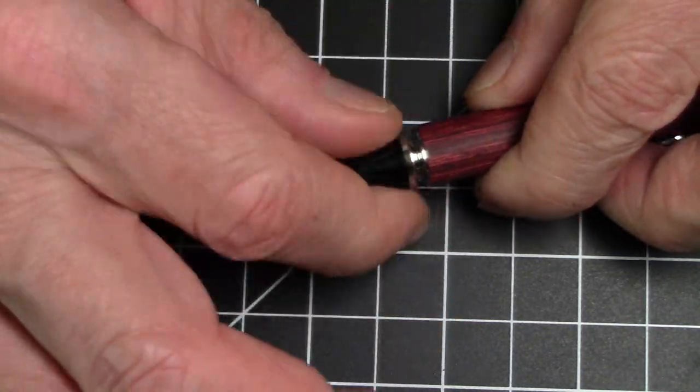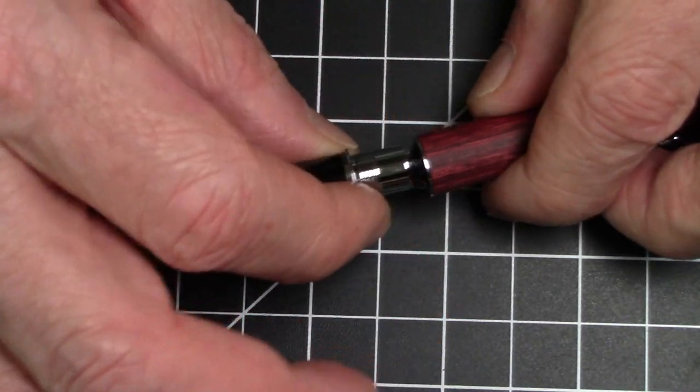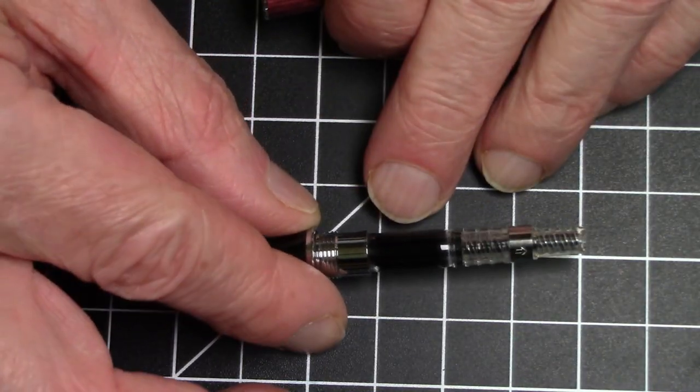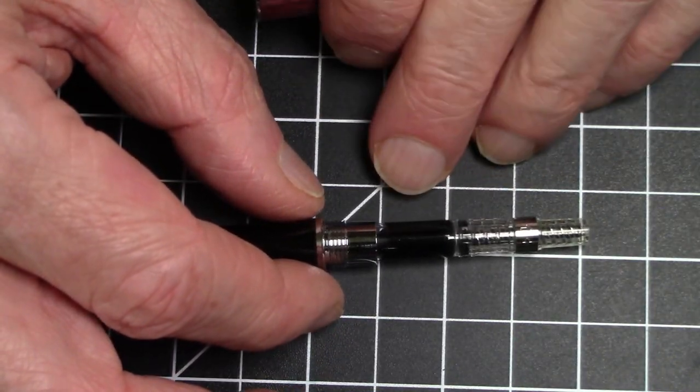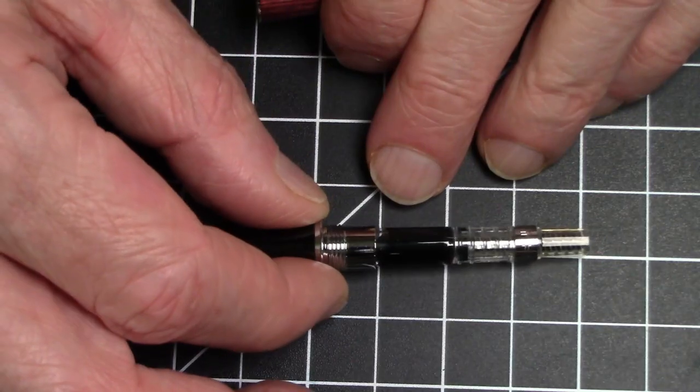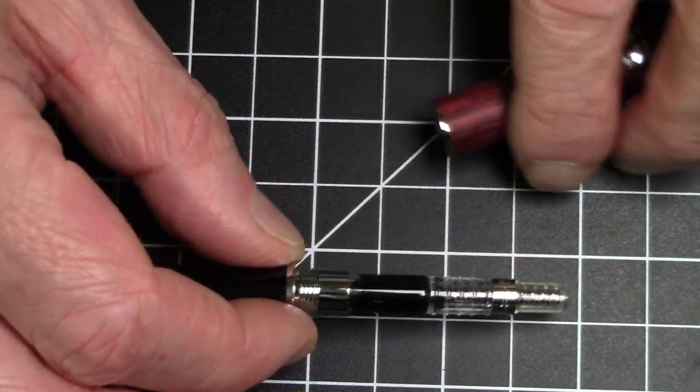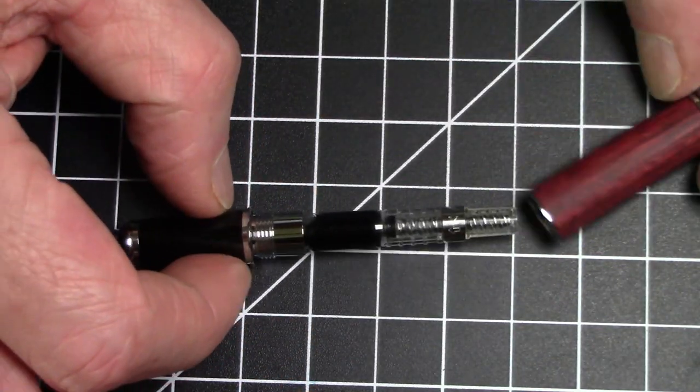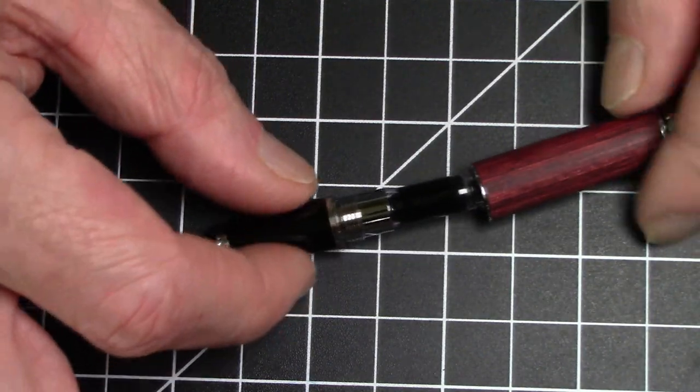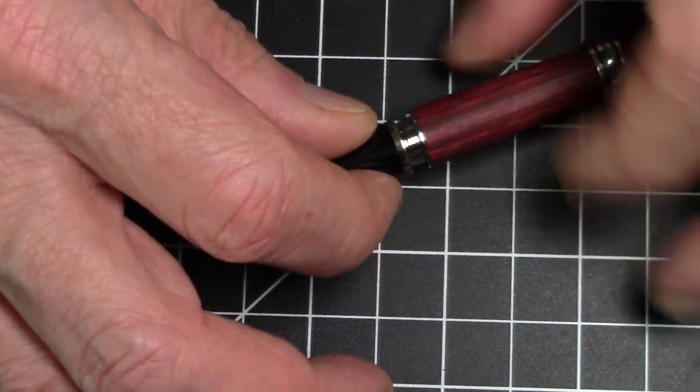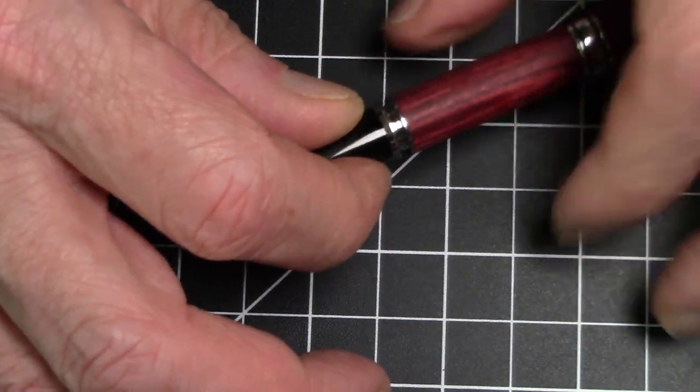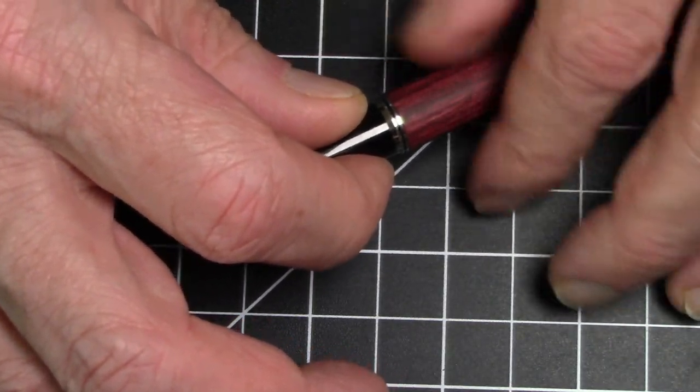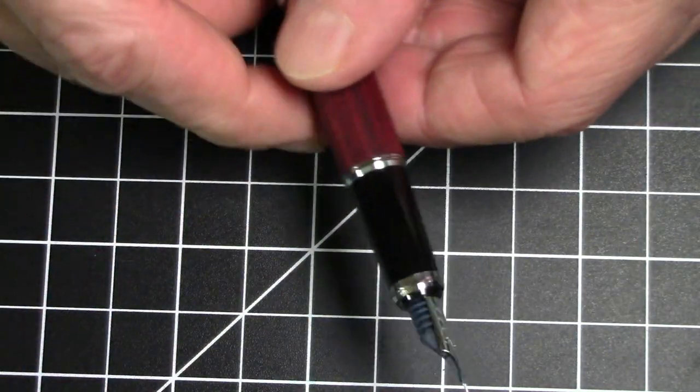And in terms of filling mechanism, as you can imagine, cartridge converter, and you're kind of limited on what converters will fit this. Obviously, big CON70 will not even come close to fitting in this. So here we have it with a CON40. And we've said it before, pilot converters are, let's just say, suboptimal at best. So you are kind of at the mercy of using pilot cartridges or something like a CON40, which is not a great converter.